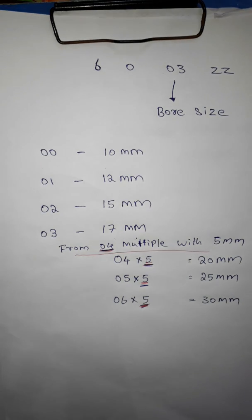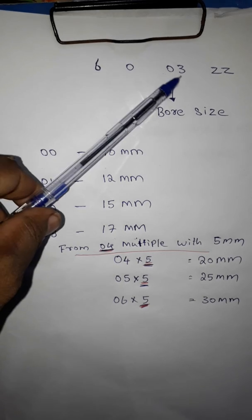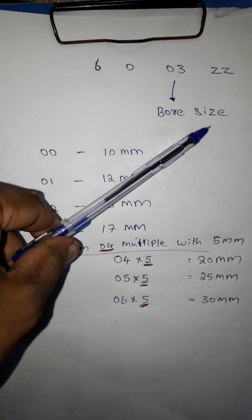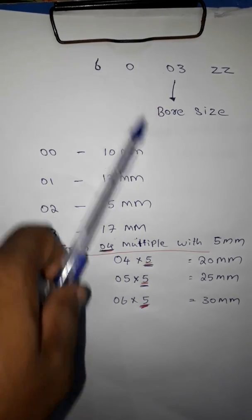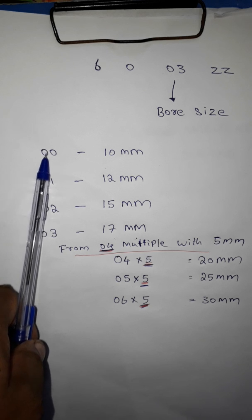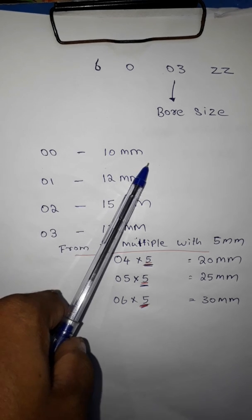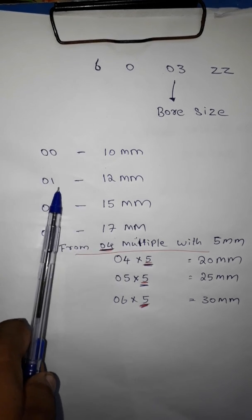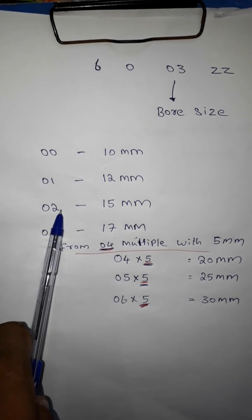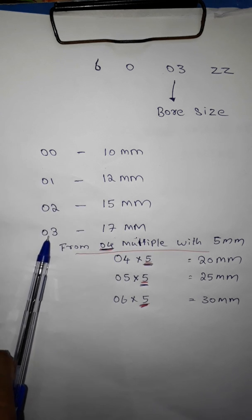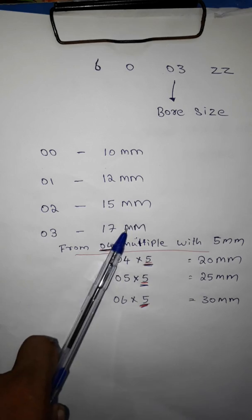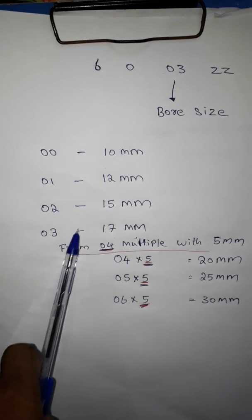The 3rd and 4th numbers represent size — that is 2 digits. 00 = 10 mm, 01 = 12 mm, 02 = 15 mm, 03 = 17 mm.